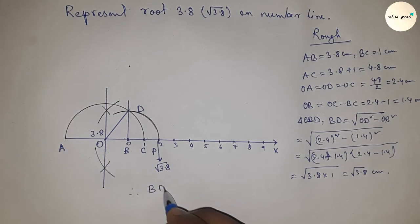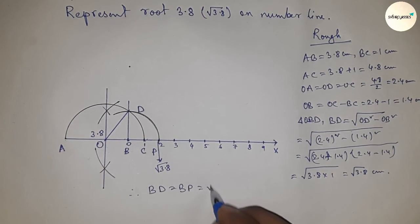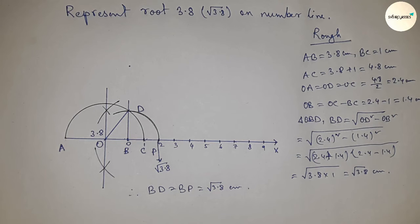Therefore, distances BD and BP are equal to root 3.8 centimeters. That's all, thanks for watching. Please subscribe, like, and comment on my video.